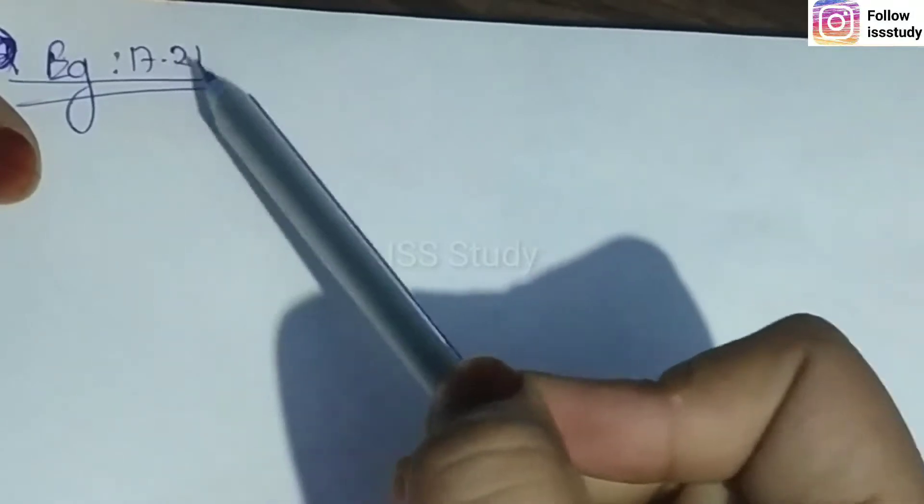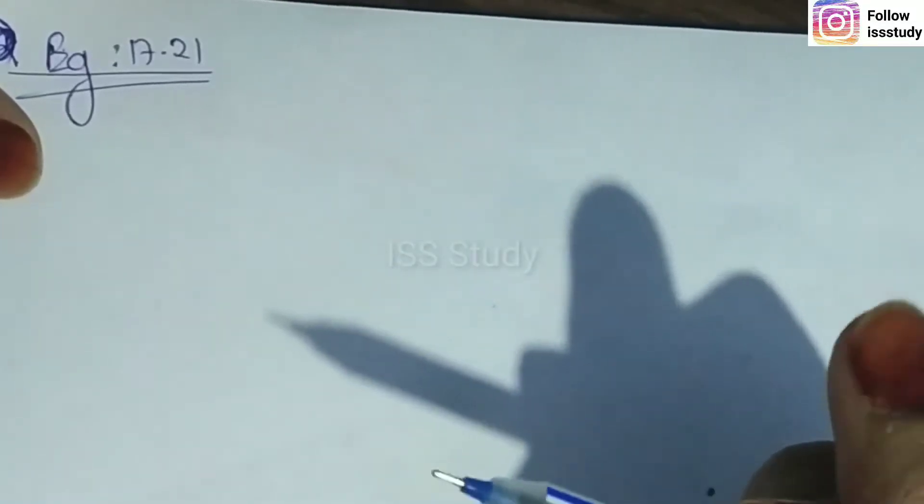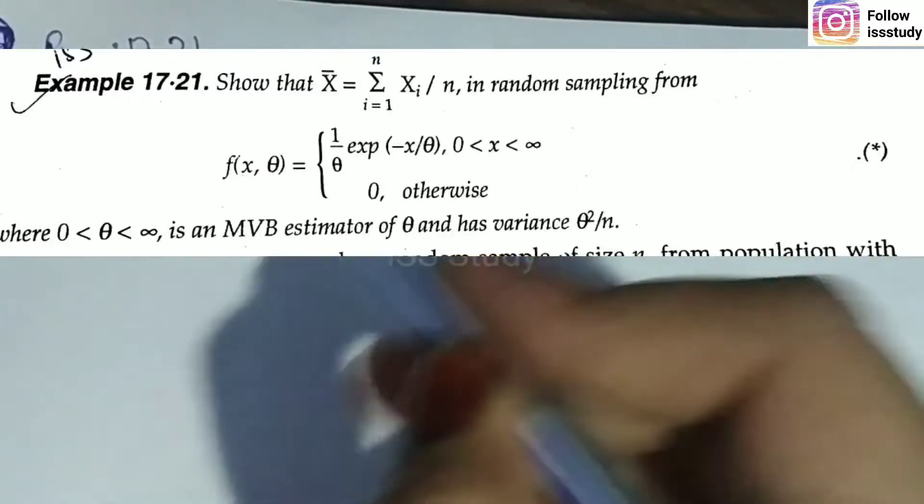Hello everyone, welcome back to my channel. Today we will discuss Example 17.21, which is based upon Cramer-Rao inequality. This example says to show that x-bar, in a random sampling from this distribution, is an MVBE estimator of theta and has variance θ²/n.